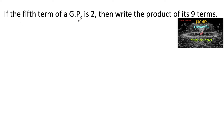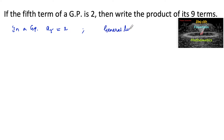If the fifth term of a GP is 2, then find the product of its 9 terms. The general nth term of a GP is given by a into r to the power of n minus 1, where a is the first term and r is the common ratio. So we can write the fifth term, a5, as a into r to the power 4, which equals 2.